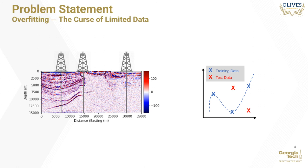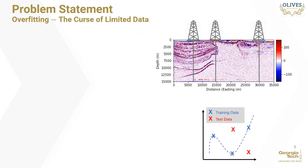Learning-based seismic inversion suffers the problem of overfitting because of the limited availability of well log data. This is a direct consequence of the fact that wells are expensive to drill — a single well may cost up to millions of dollars. Machine learning models commonly trained for inversion tasks may contain thousands to hundreds of thousands of free parameters. Over-parameterized models trained on seismic surveys with limited well data memorize the training set while doing poorly on unseen test samples. The problem of limited well data may be circumvented by utilizing well data from other surveys in a machine learning paradigm called transfer learning.